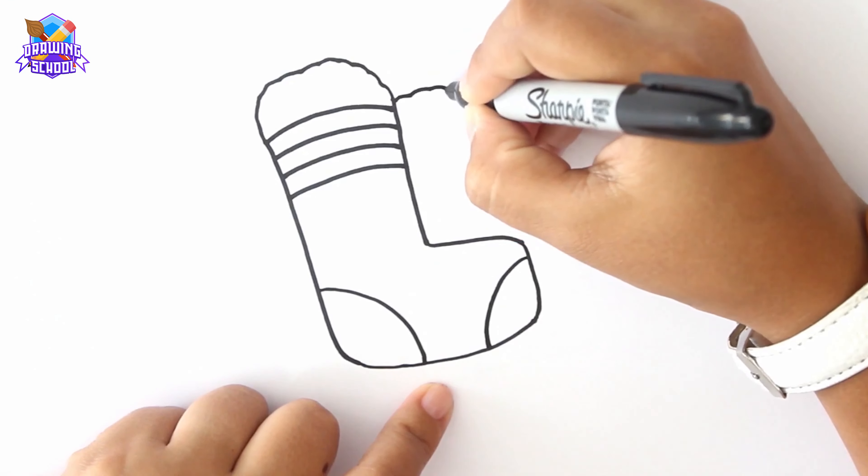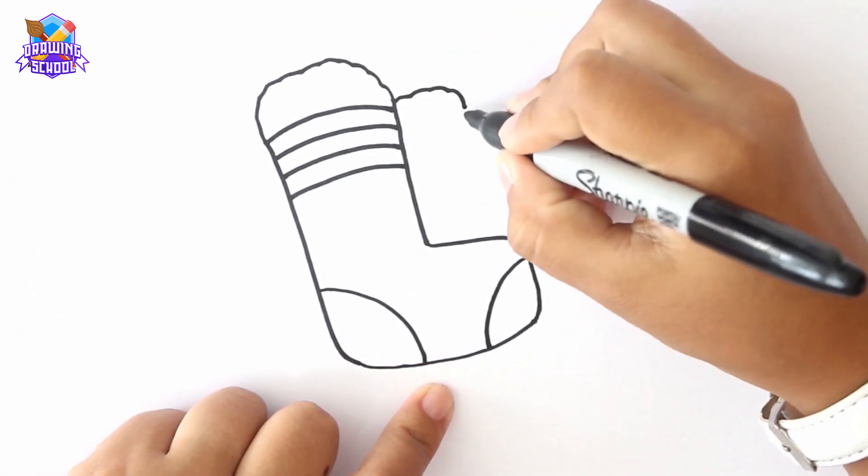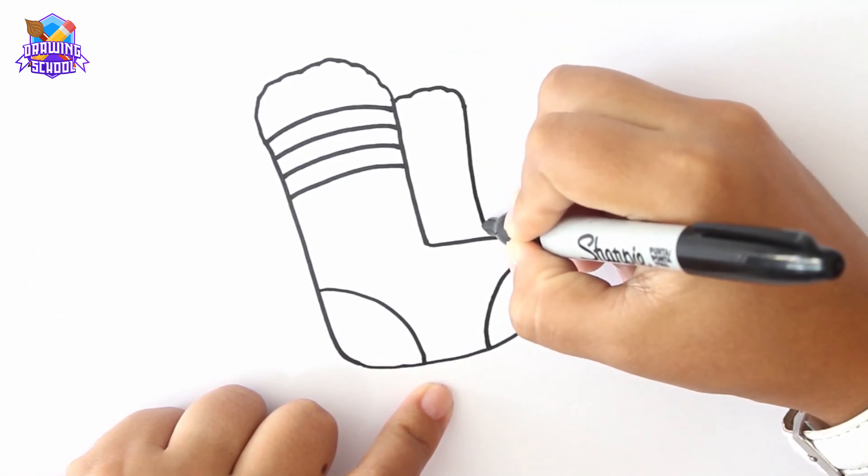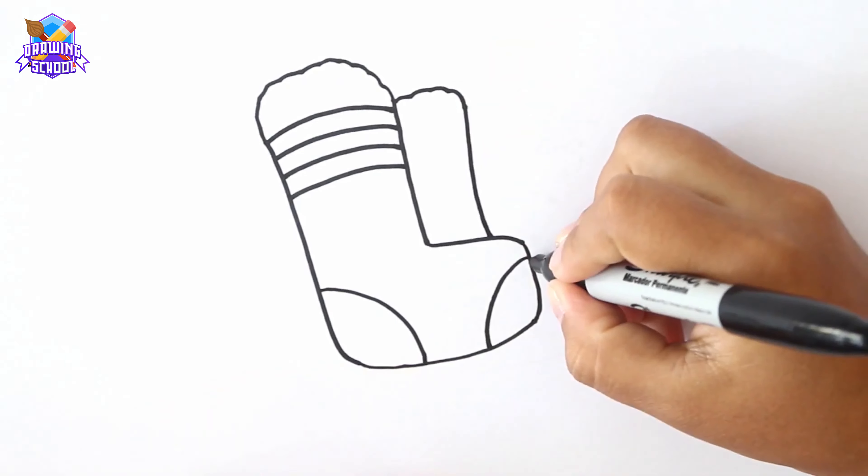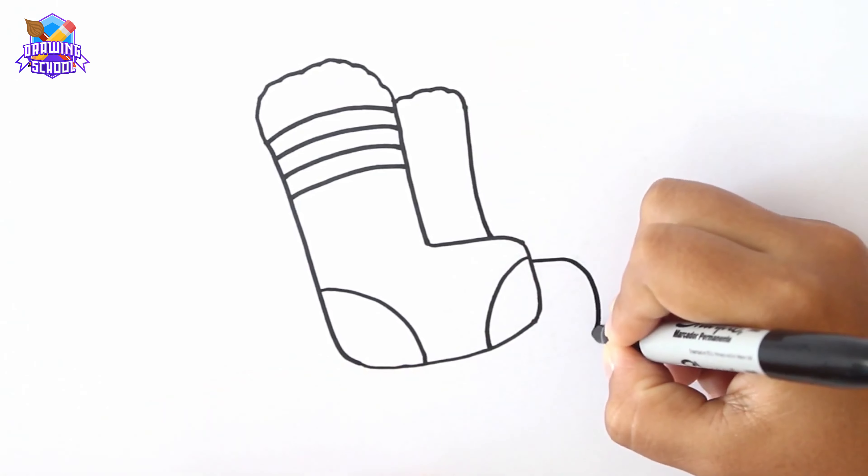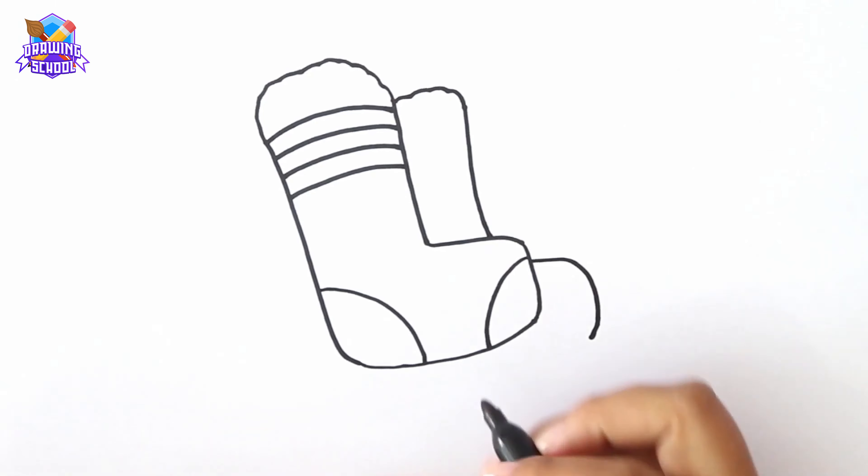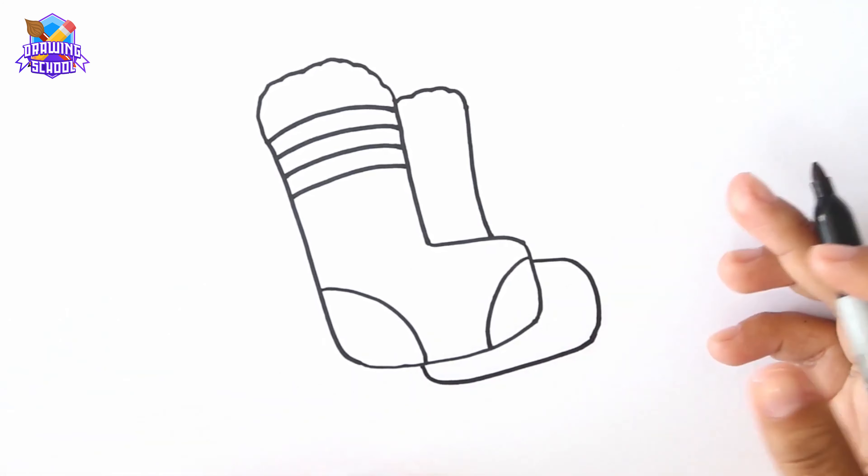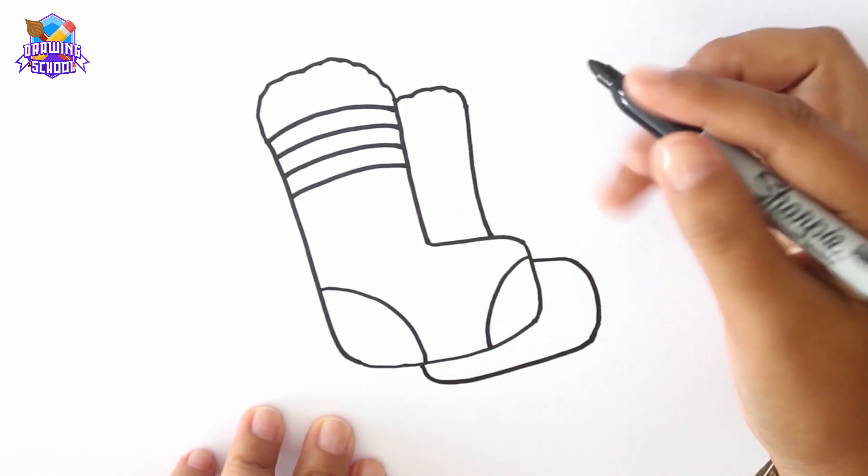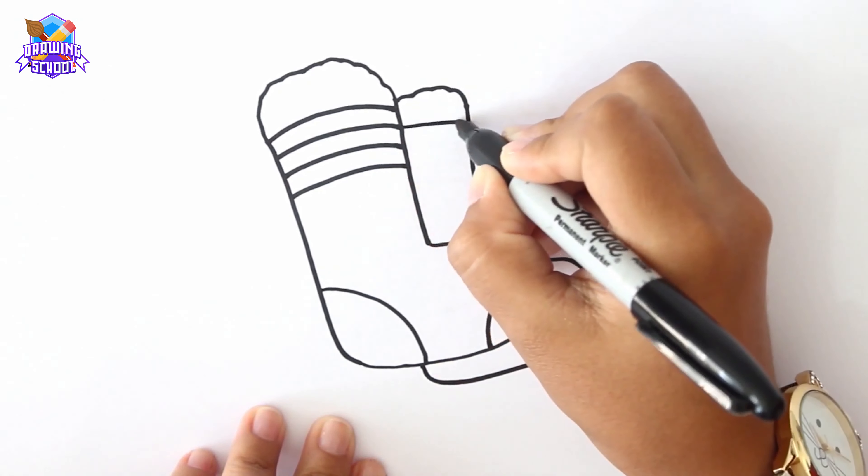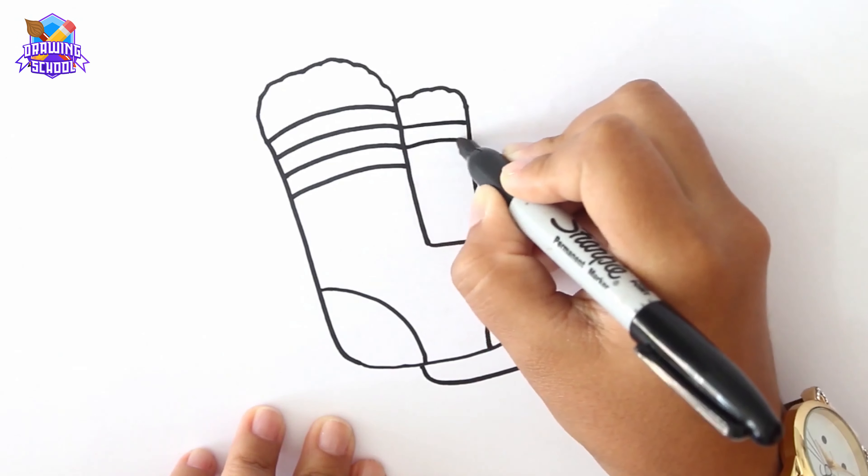Now we draw another one to complete the pair. We draw the same shape behind the first one. And we add some details too.